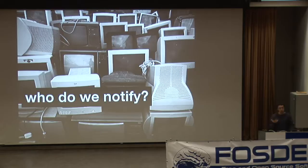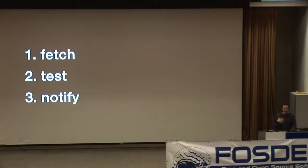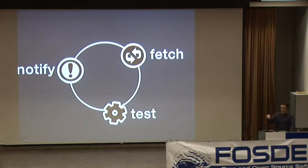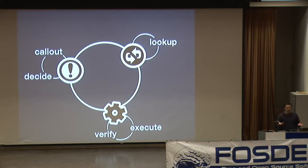We take these three questions and they actually map into three distinct phases: the fetch, the test, and the notify phase. If we represent that in a diagram, it's basically this gigantic circle going around and around — the fetching, the testing, the notifying.